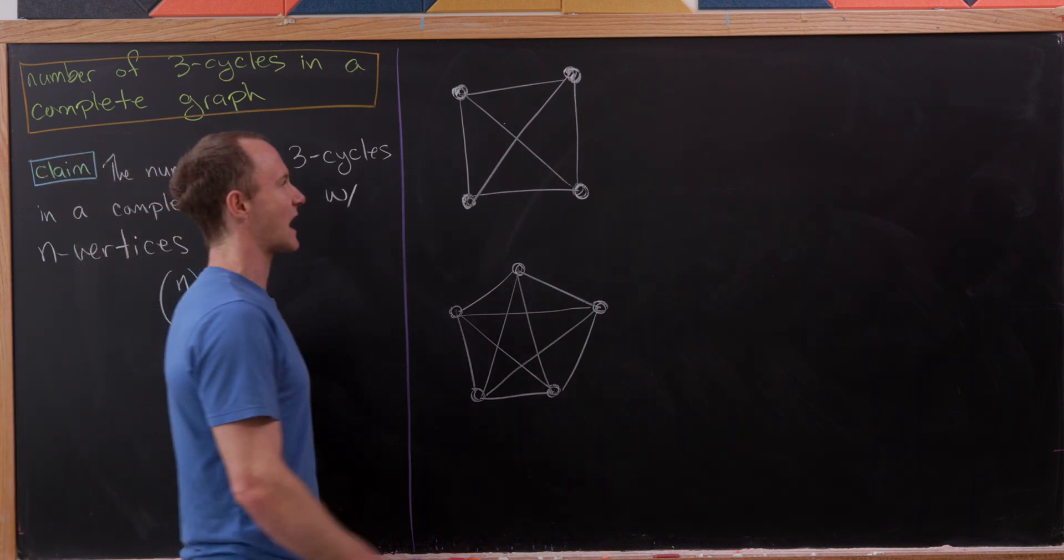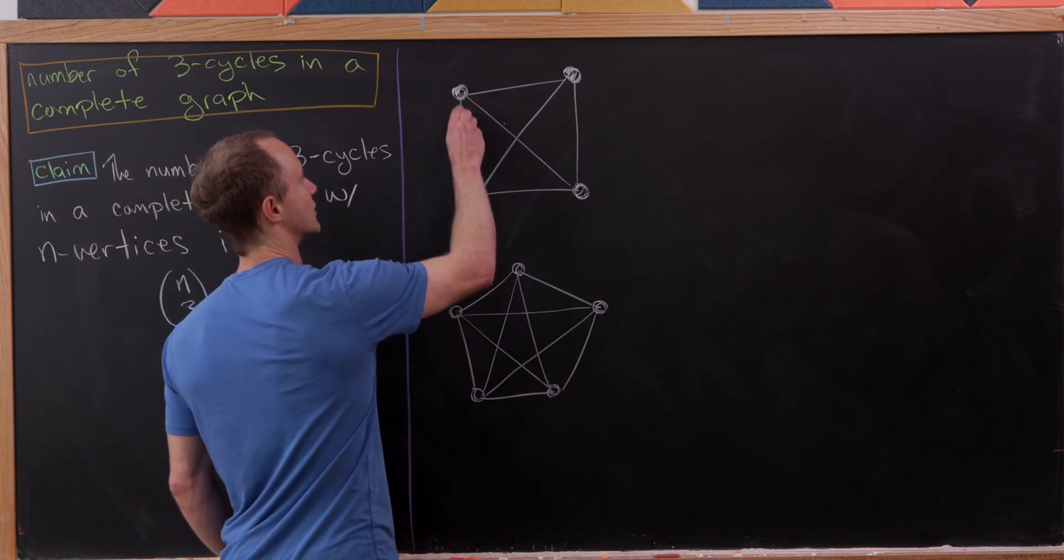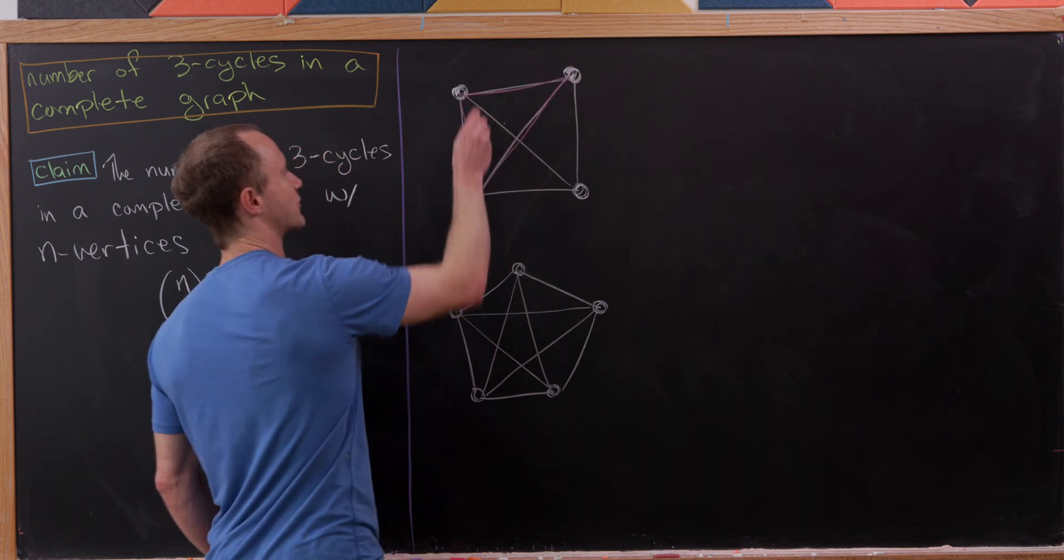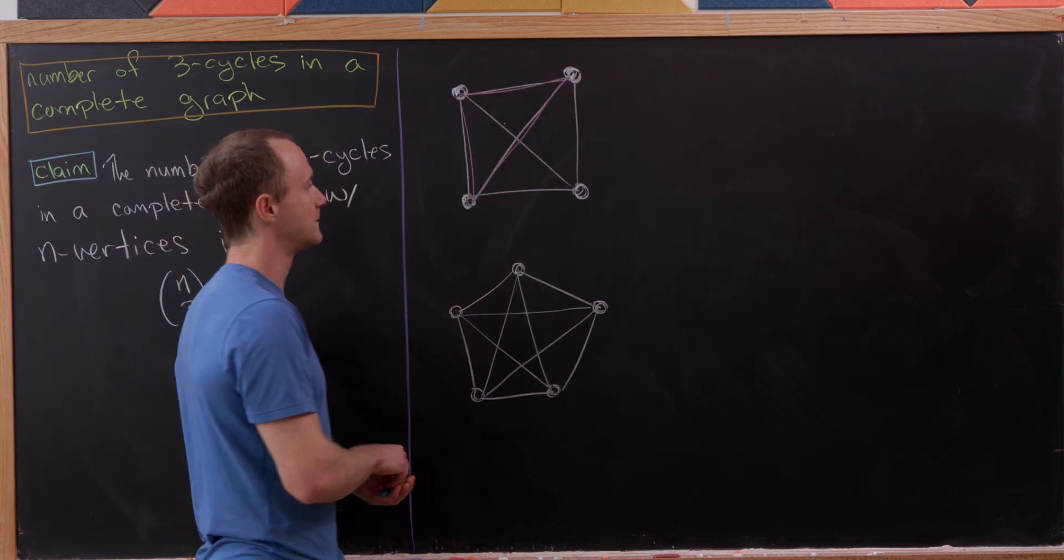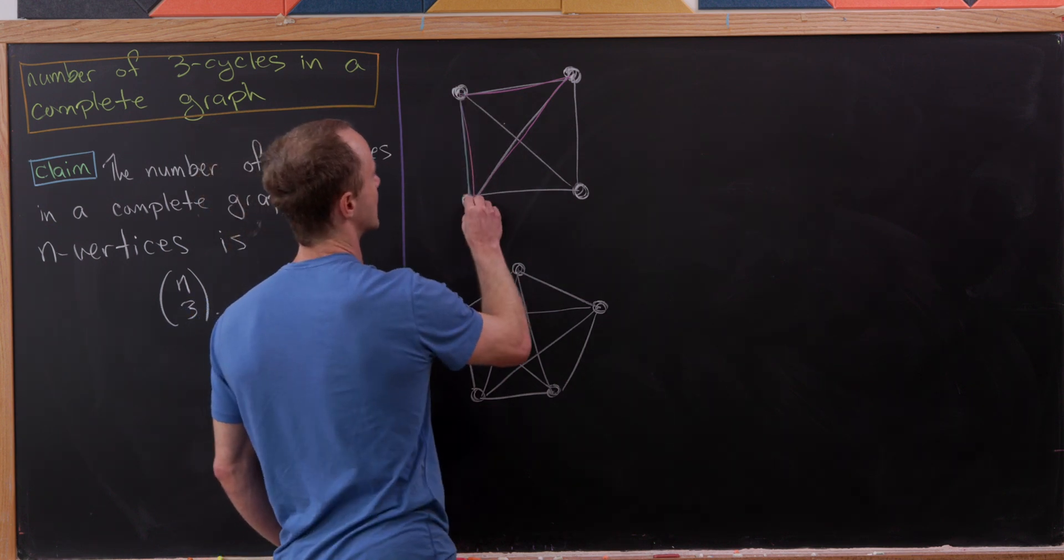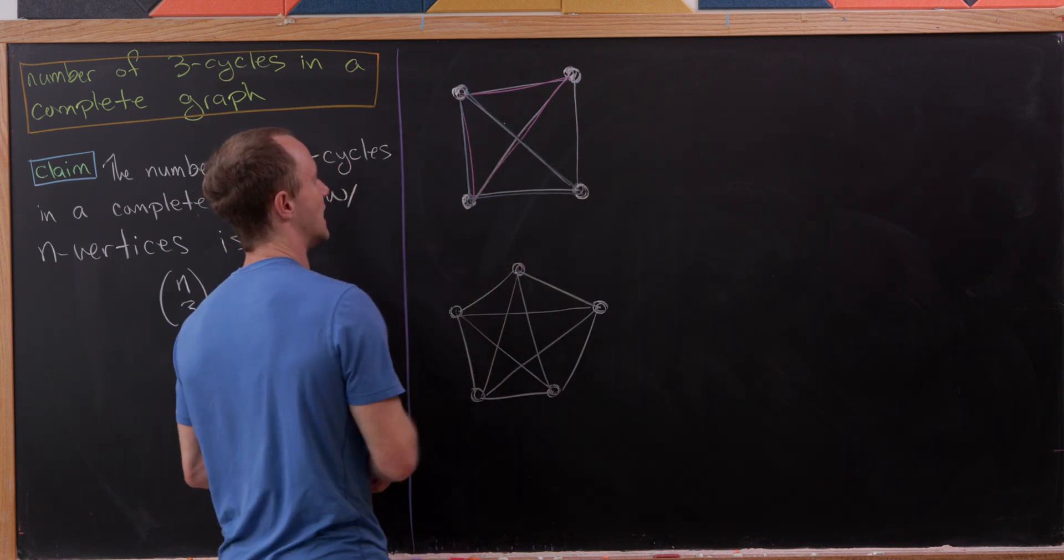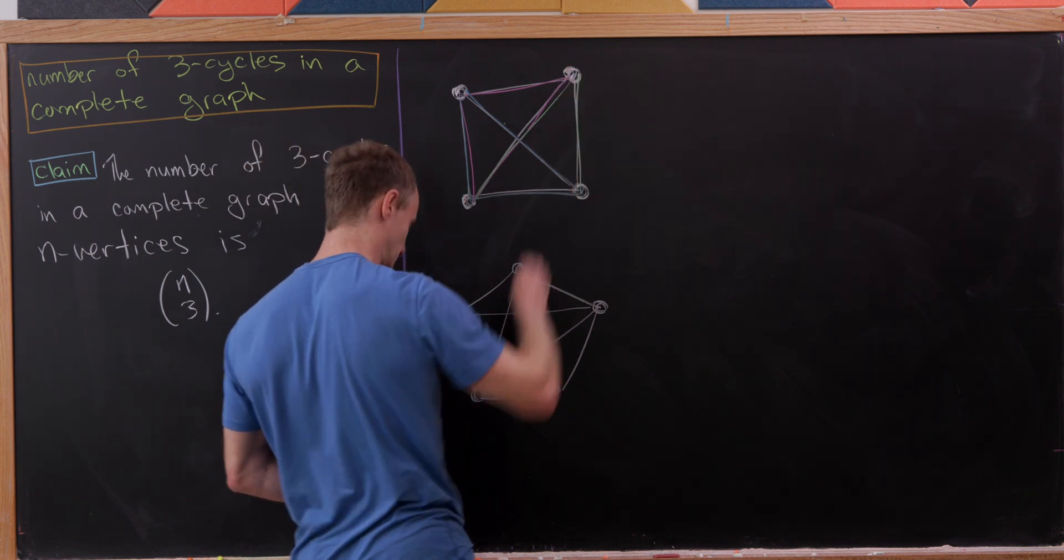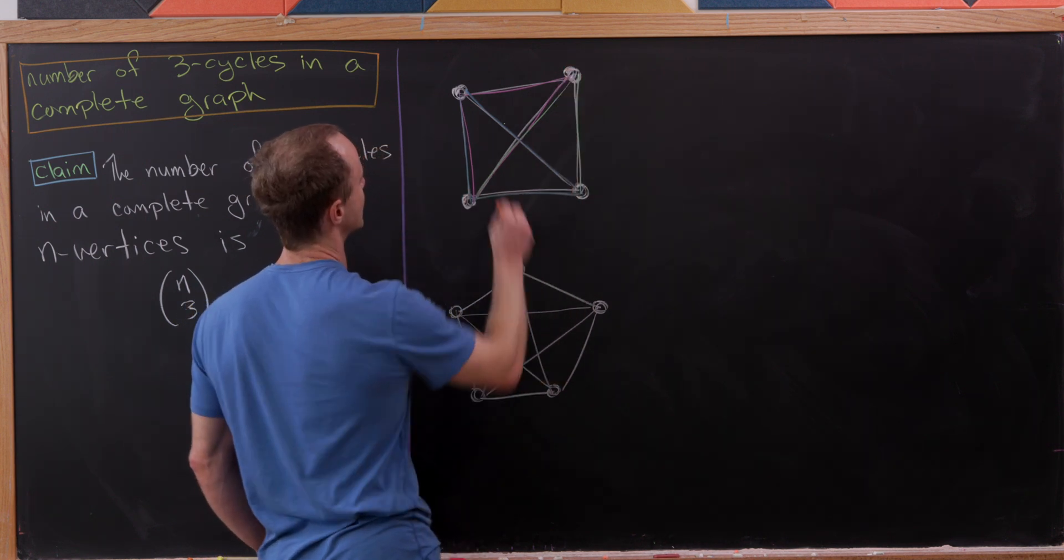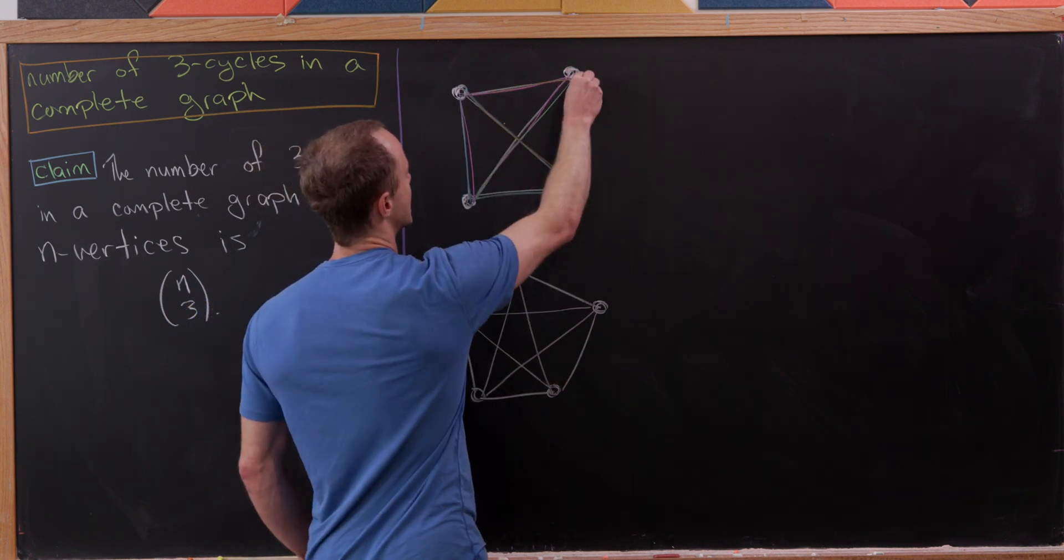I think we can count them up pretty easily. Notice here we've got a three cycle. Recall that three cycles are simply triangles. There we've got one, and another one here makes two. We've got one here, which is three. And finally, one more, which makes four.